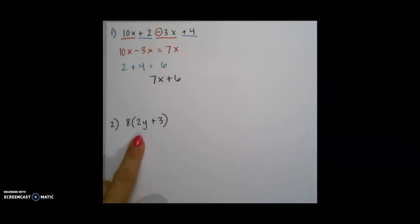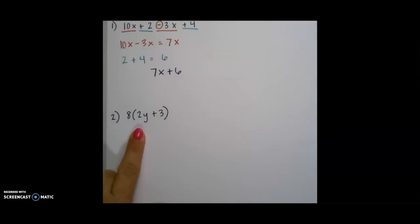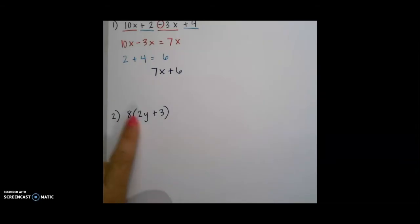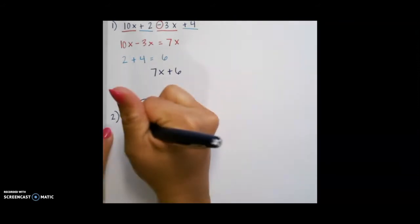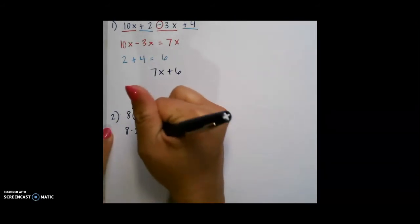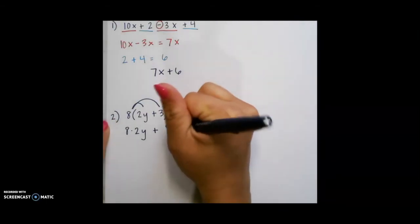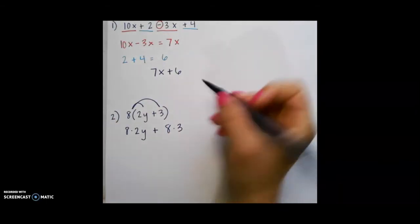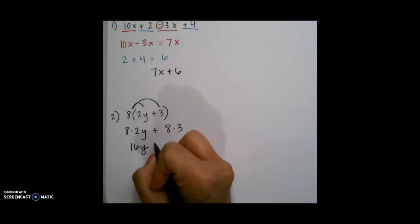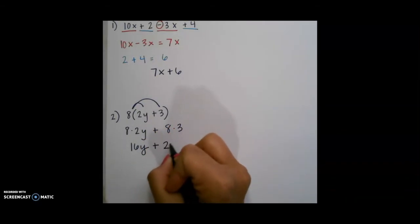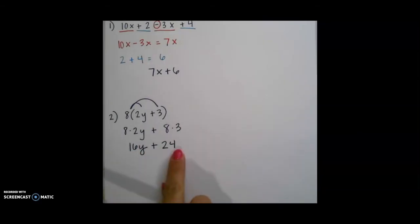For our next example, we see parentheses. We want to use what we know about distributive property to solve this one. We are going to distribute the 8 to everything inside the parentheses. Remembering that distribute means to multiply with a plus sign in the middle. So I am going to multiply 8 times 2y, which gives me 16y plus sign in the middle. 8 times 3 is 24. I do not see any like terms, so this expression is simplified as far as I can go.